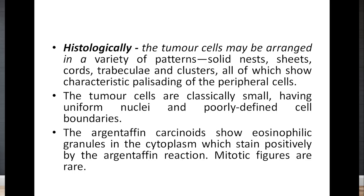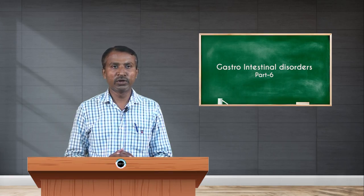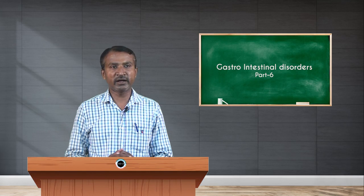Histologically, the tumor cells may be arranged in a variety of patterns — solid nests, sheets, cords, trabeculae, and clusters — all of which show characteristic palisading of the peripheral cells. The tumor cells are classically small, having uniform nuclei and poorly defined cell boundaries. The argentaffin carcinoids show eosinophilic granules in the cytoplasm which stain positively by the argentaffin reaction. Mitotic figures are very rare.